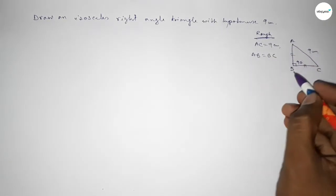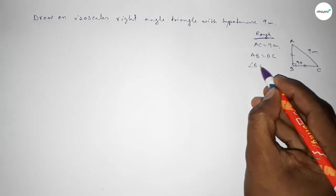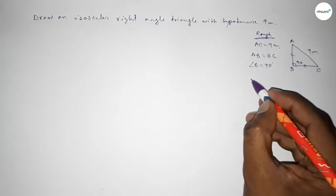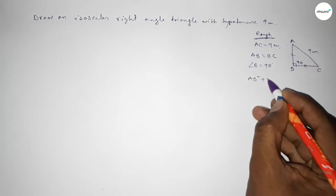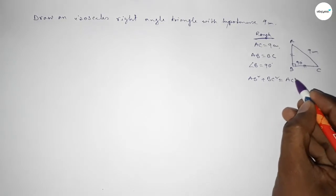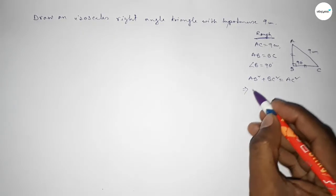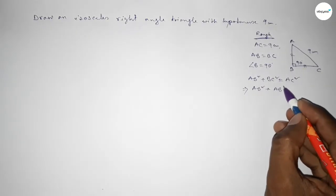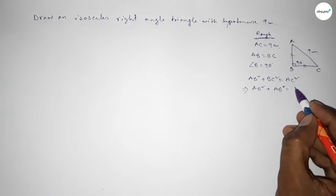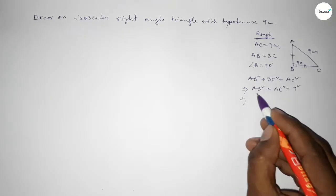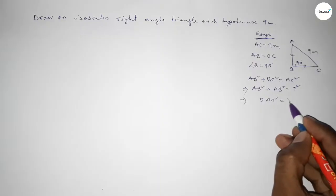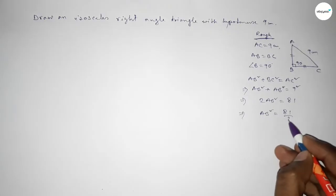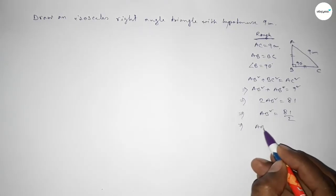Since angle B equals 90 degrees, by Pythagoras theorem: AB squared plus BC squared equals hypotenuse squared, so AB squared plus BC squared equals AC squared. Since AB equals BC, this gives 2AB squared equals 9 squared, so 2AB squared equals 81, therefore AB squared equals 81 over 2.